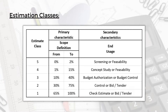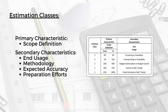Starting with the estimation classes, we have five classes of estimate: class 5, 4, 3, 2, and 1. What differentiates these classes from each other? We have two things: the primary characteristics and the secondary characteristics. What makes a class 3, for example, a class 3? It depends on some primary characteristics and some secondary characteristics. The primary one is the scope definition — this is the most important characteristic that differentiates the estimate classes.